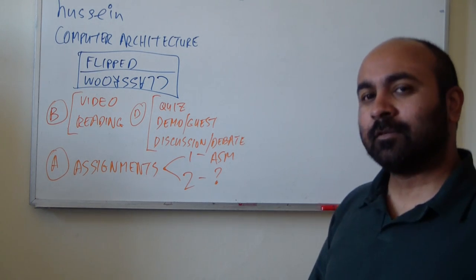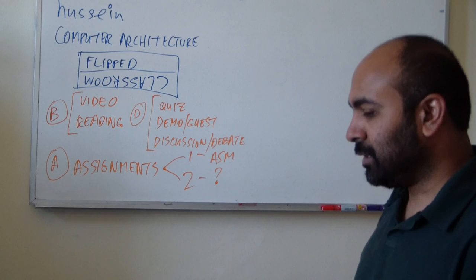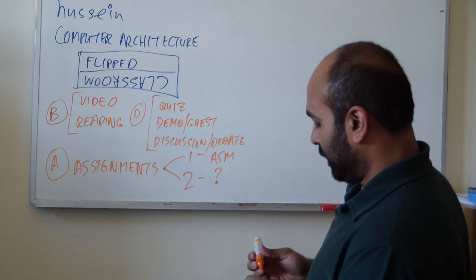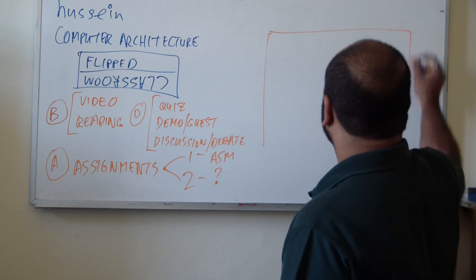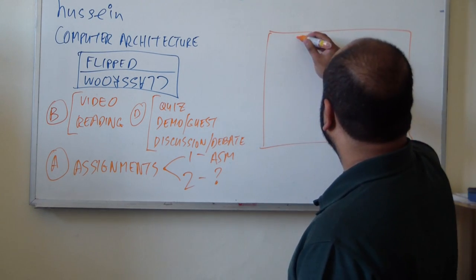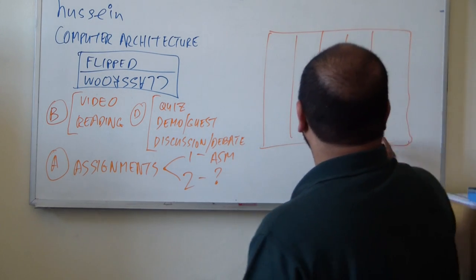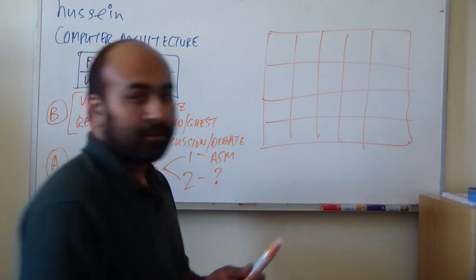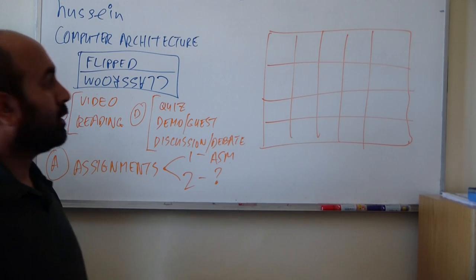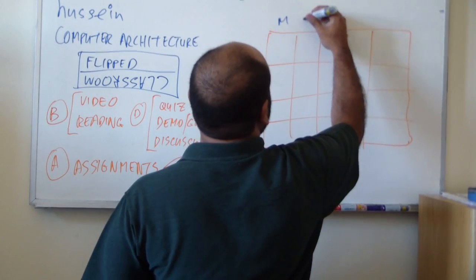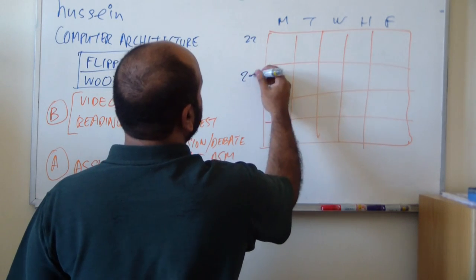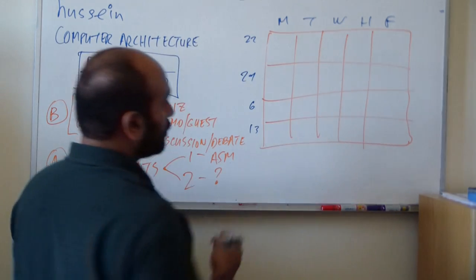Right. So, lectures. What lectures do we have? When are these lectures going to be? Well, I thought I will just show you a quick timetable for the course. Let's just draw the grid here. One, two, three, four. So, we have four weeks left in this academic year. Monday, Tuesday, Wednesday, Thursday, Friday. This is the 22nd of September, the 29th of September, the 6th and 13th of October.